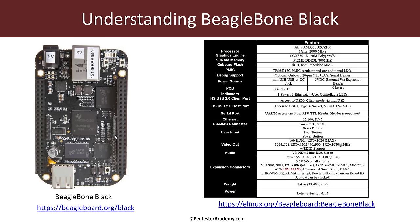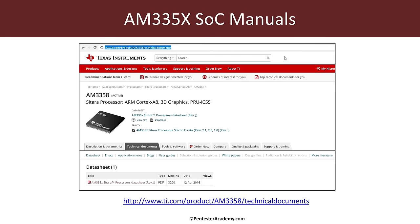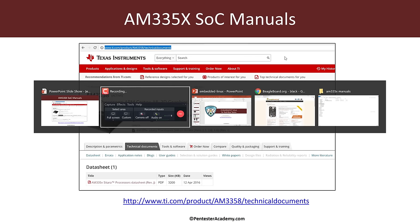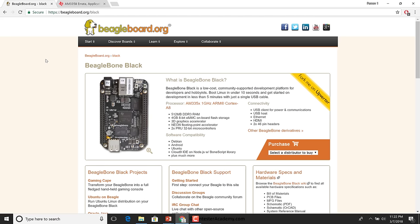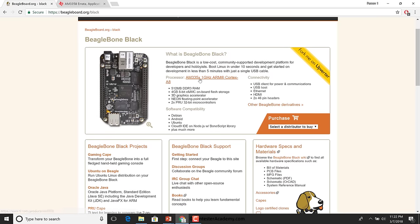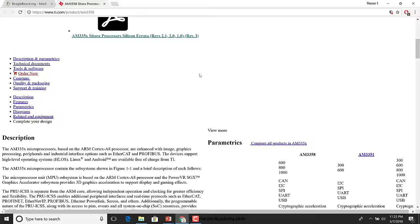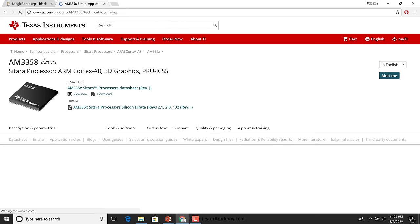Now we will focus on understanding how this works for the BeagleBone Black. As discussed in the previous video, the BeagleBone Black is based on a Texas Instruments SoC called the AM335X series. Let's go to their website. I've gone to the BeagleBone website where they have a link to the AM335X — you can open that up in a new tab, scroll down, and go to the technical documents page.